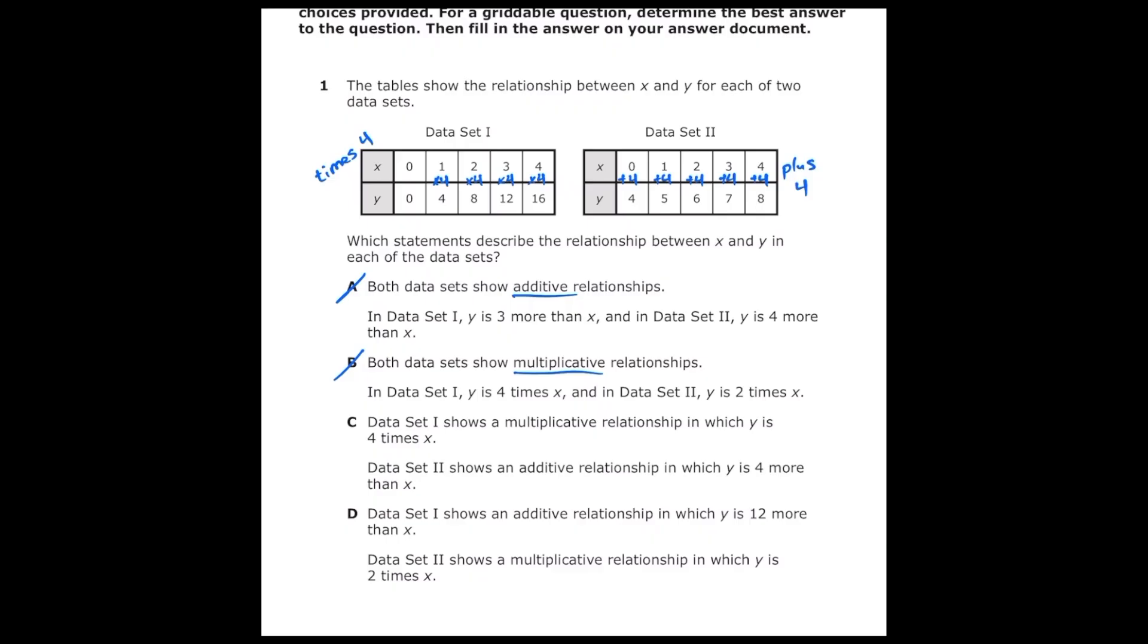Letter C says data set one shows a multiplicative relationship in which y is four times x. That sounds good. And it also says data set two shows an additive relationship in which y is four more than x. And that is also true, so my correct answer is letter C.